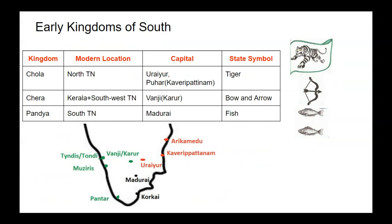In South India, when North India was ruled by Ashokan, Southern India was ruled by three important kingdoms: Chola, Chera and Pandya. The Chola rulers ruled over the modern-day location of northern Tamil Nadu. The Chera ruled over Kerala and southwest Tamil Nadu region, and the Pandya ruled over southern Tamil Nadu region.